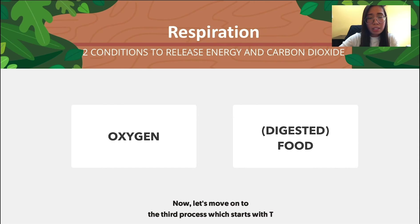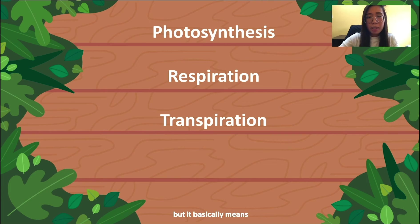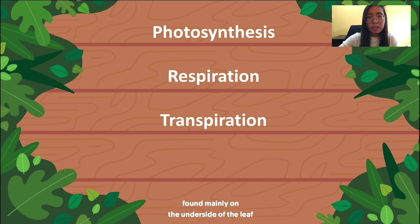The next process starts with T and it stands for transpiration. Some teachers might not have mentioned this term to you, but it basically means that water vapour is lost through the stomata of the plant. The definition of stomata is that they are tiny openings found mainly on the underside of the leaves for exchange of gases — essentially the nostrils of the plant.